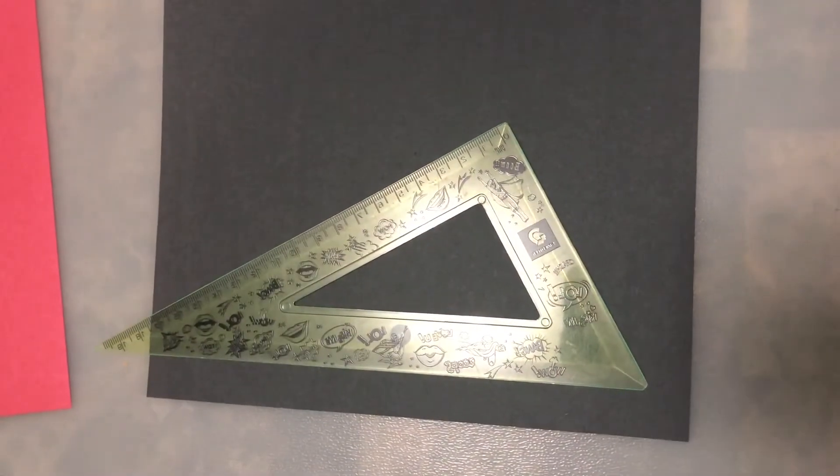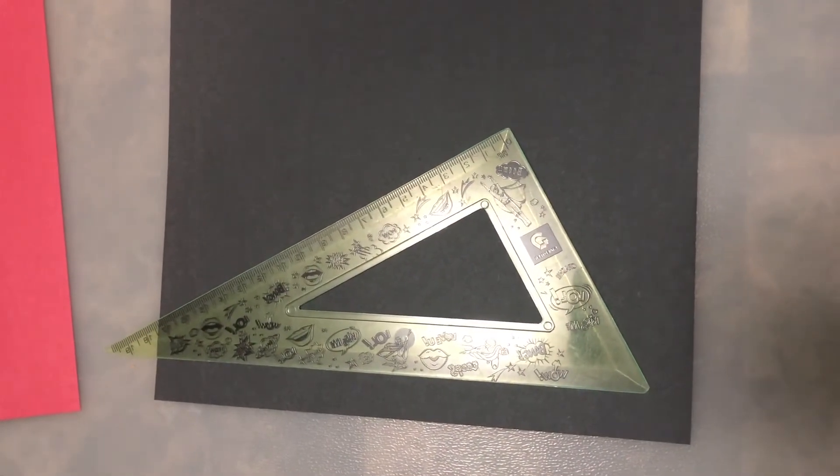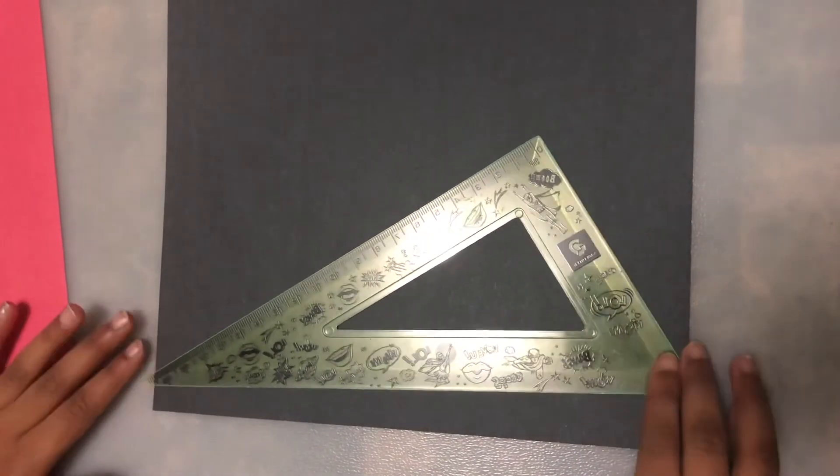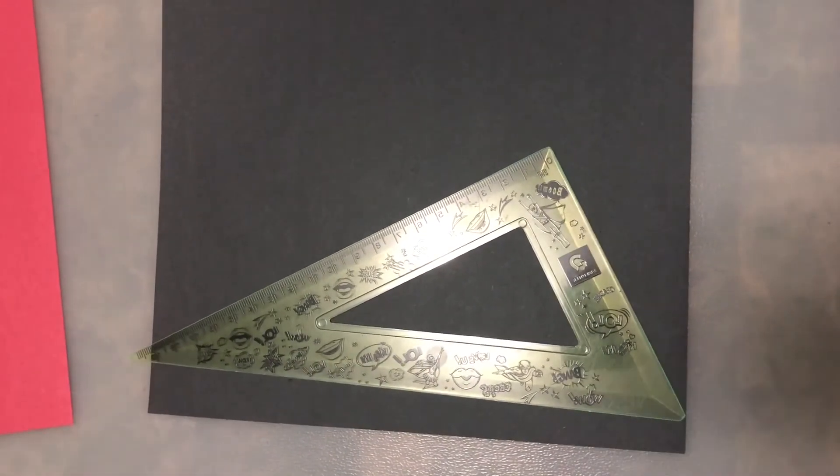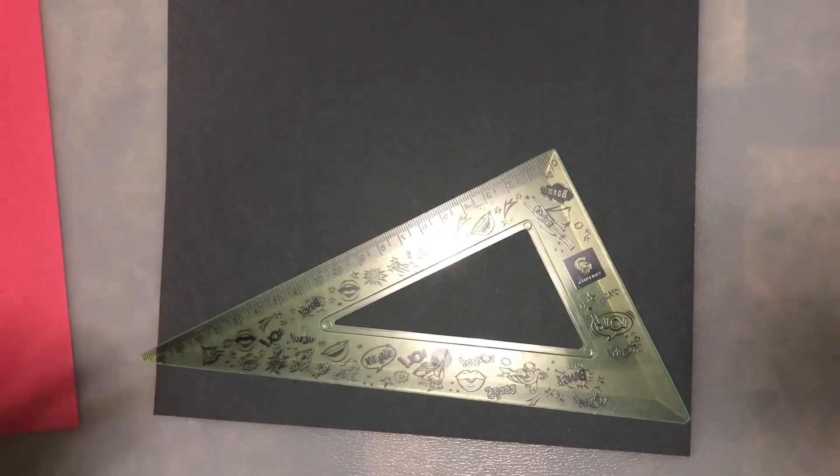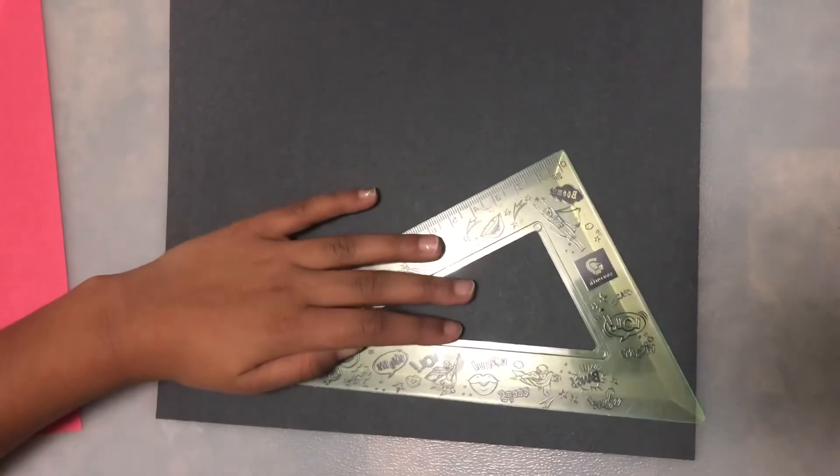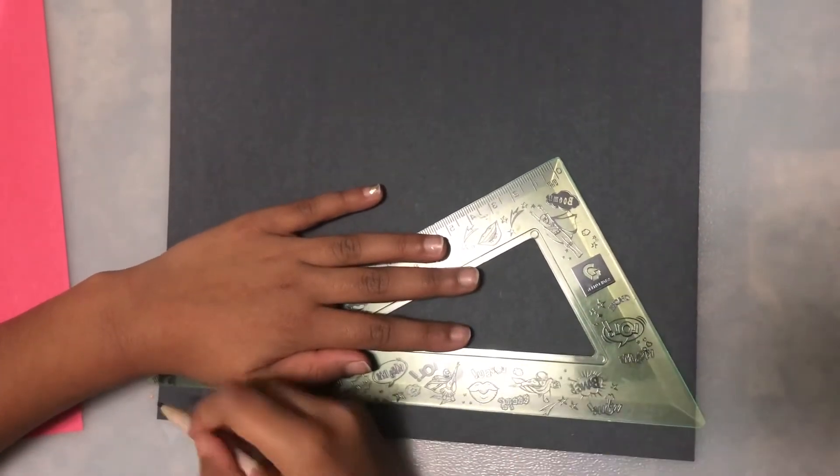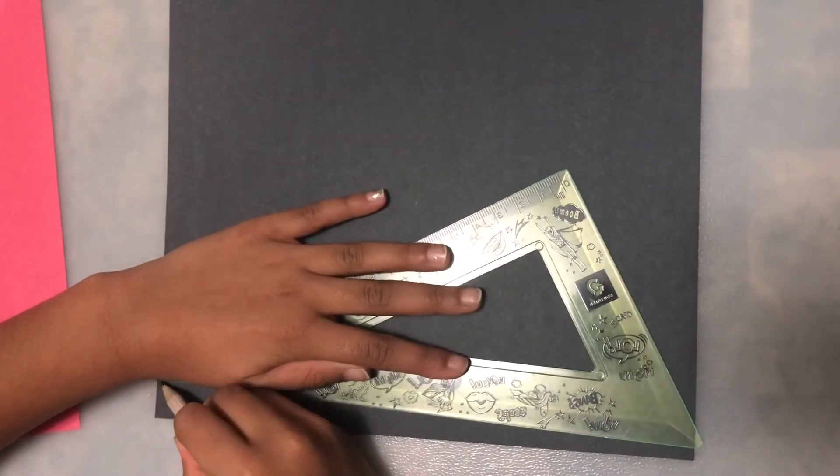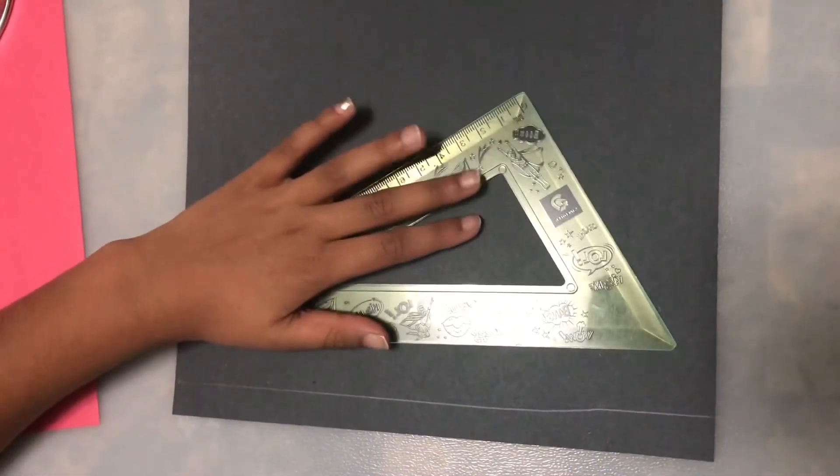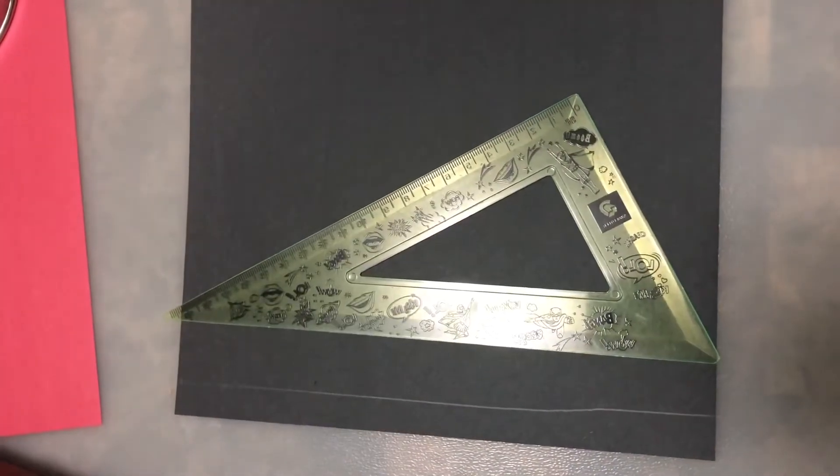Now we're gonna take our black paper and a ruler and our pencil and we're gonna make some strips for our bee's body. So I'm gonna use my ruler and make big lines. And I want them to be a little thick. And like that and keep on making. And we're gonna need four of them.